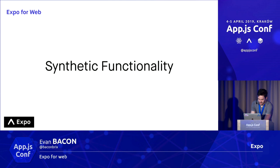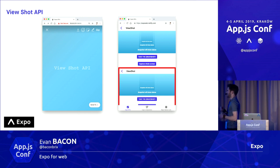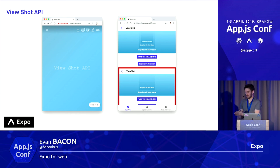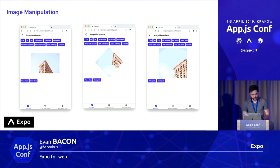Third is the synthetic functionality — functionality that doesn't exist natively in the browser, but we tried to recreate it as best we could. ViewShot is a great example. The way this works is you have an element from React, you pass that into the ViewShot API, ViewShot takes that element, tries to reconstruct it on the canvas, and then draws that canvas to an image. It's extremely prone to errors, but at least it kind of works.